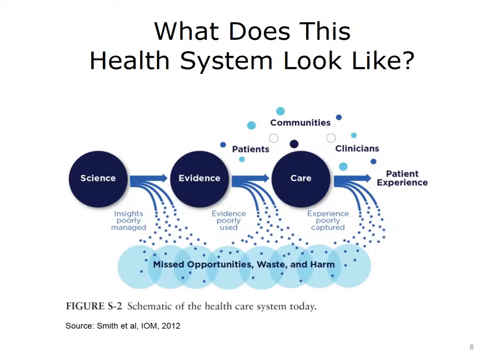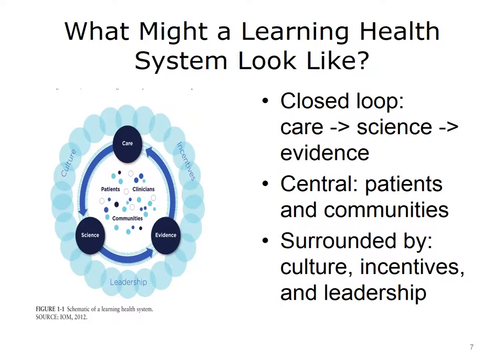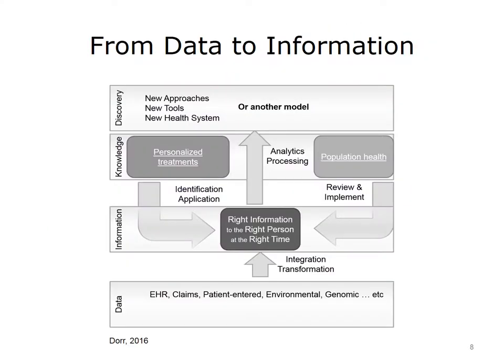Here is a graphic visualization of these issues. We don't apply the insights from science, nor add the evidence to care, nor include patient and family experience and outcomes, leading to significant numbers of missed opportunities, waste, and harm to patients. The Learning Health System intends to address this by creating a closed loop for science and evidence to be included in care, and then for care to generate more knowledge. An important part of a Learning Health System is that patients and communities are at the center, and that culture, incentives, and leadership help provide an environment where this is possible.